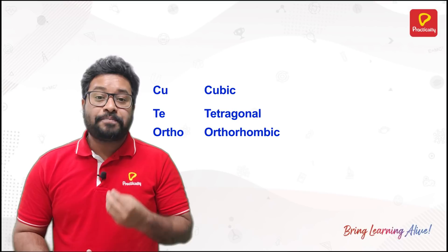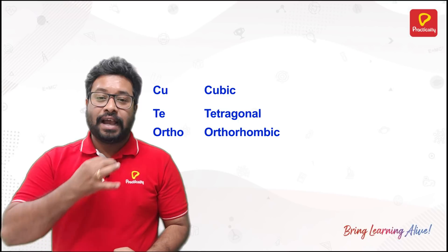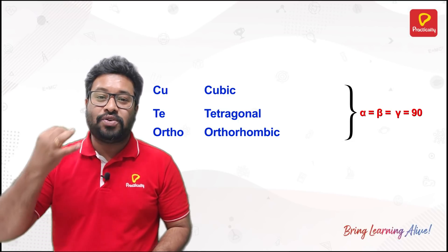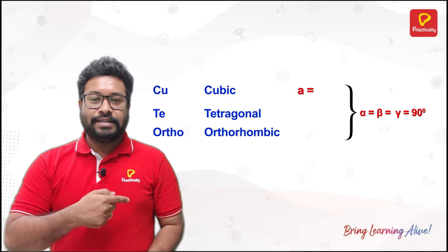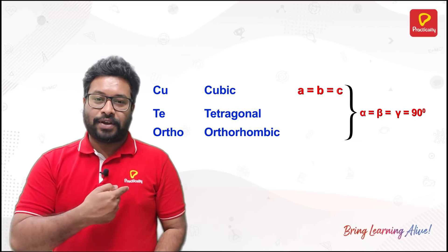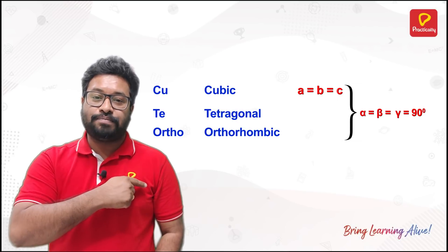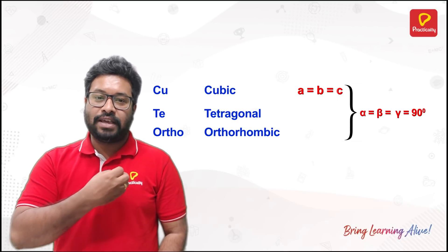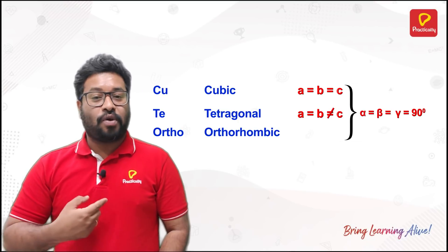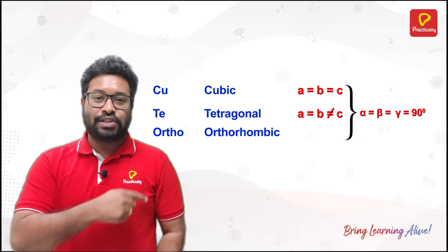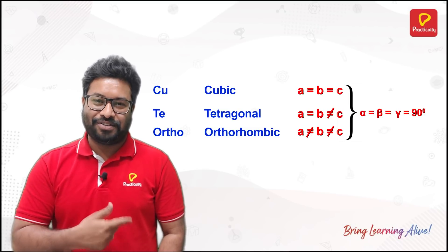For all these 3 — cubic, tetragonal, orthorhombic — their interfacial angle is exactly the same: alpha is equal to beta is equal to gamma is equal to 90 degrees. For their sides: cubic has A equal to B equal to C. Going from cubic to tetragonal, slash across B equal to C, so now A equal to B, not equal to C. Going to orthorhombic from tetragonal, slash across A equal to B, so A not equal to B not equal to C.